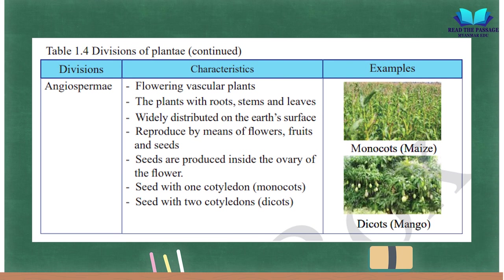Angiospermae (flowering vascular plants): plants with roots, stems, and leaves; widely distributed on the earth's surface; reproduce by means of flowers, fruits, and seeds; seeds are produced inside the ovary of the flower; seed with one cotyledon (monocots) or two cotyledons (dicots); examples: monocots — maize; dicots — mango.